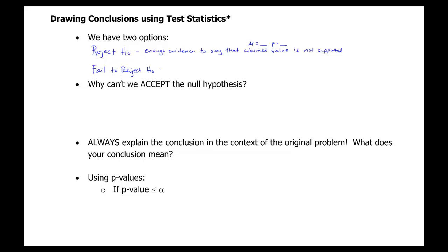If you fail to reject the null hypothesis, that means you did not have enough evidence to reject the null hypothesis, so the claimed value is actually supported. Whatever the claimed value was in your null hypothesis for a mean or a proportion, that's going to be supported if you fail to reject the null hypothesis.